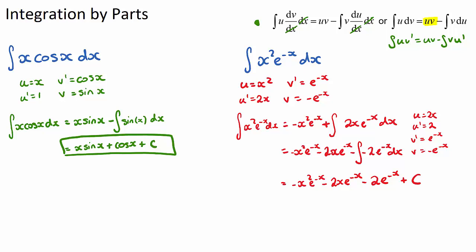So this is quite long because we apply integration by parts twice, which is common in more challenging IB Maths questions. We just need to make sure we track all the correct signs — there was a triple negative at one point — but this is our final answer.